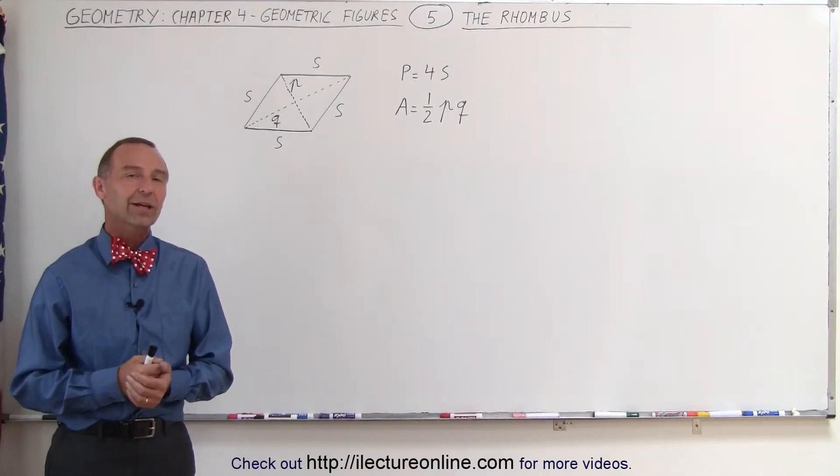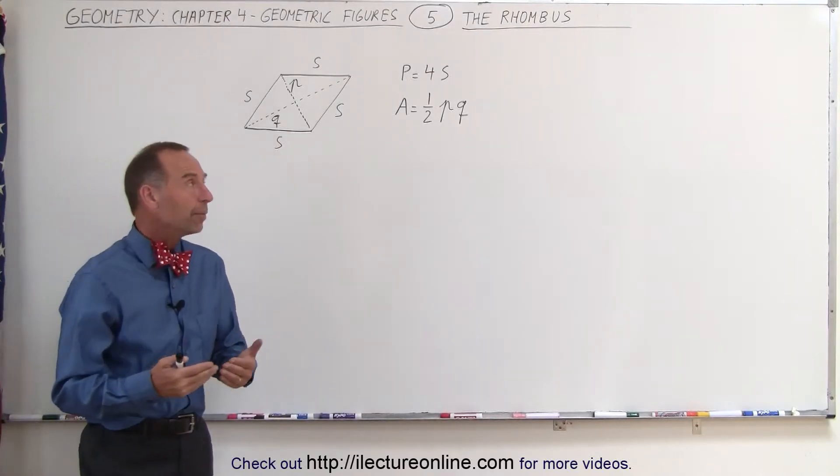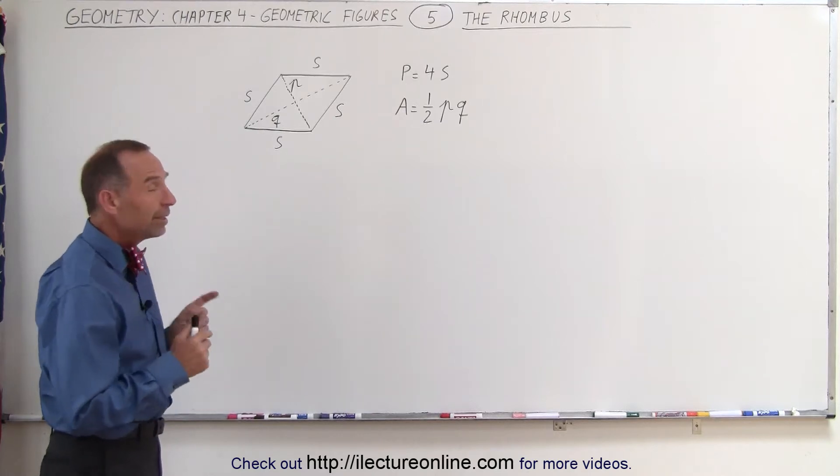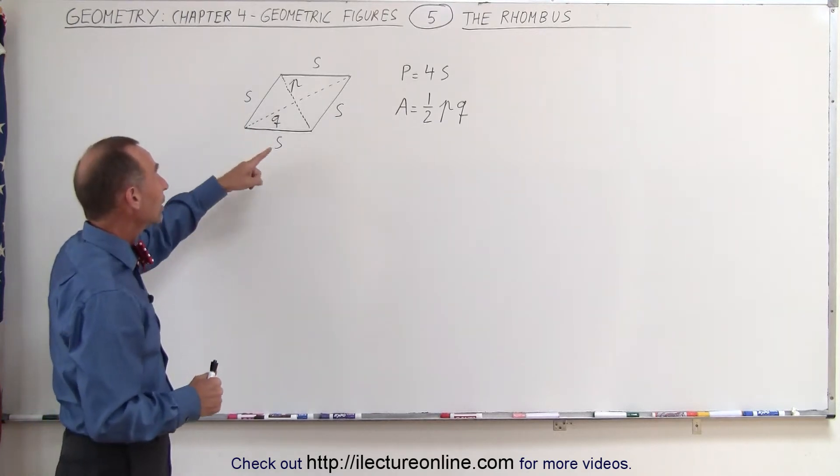Welcome to ElectronLine. Now let's take a look at the rhombus. The rhombus is like a parallelogram, but in this case the length of all sides are equal to one another.